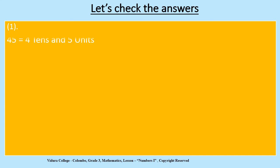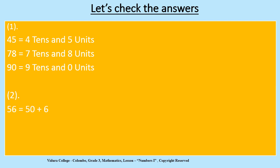Children, let's check the answers. Question 1: 45 equals 4 tens and 5 units. 78 equals 7 tens and 8 units. 90 equals 9 tens and 0 units. Question 2: When you expand 56, the answer is 50 plus 6. When you expand 82, the answer is 80 plus 2. When you expand 60, the answer is 60 plus 0. Did you get all the answers correct? Well done.